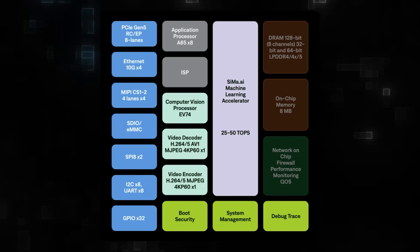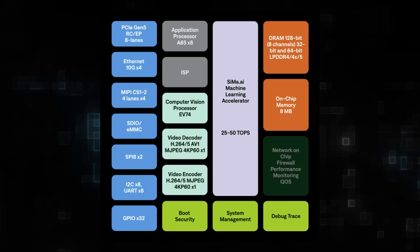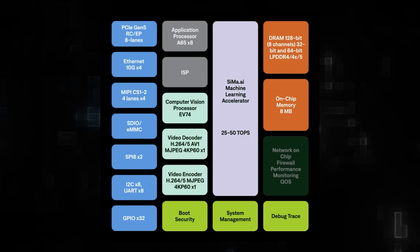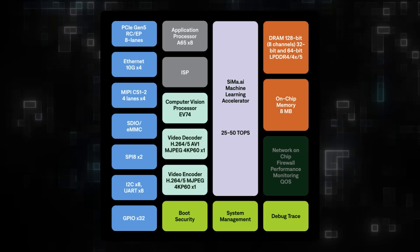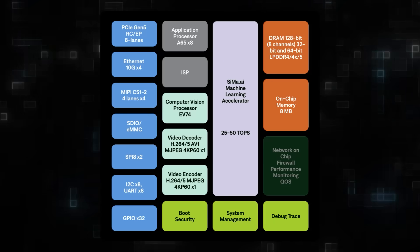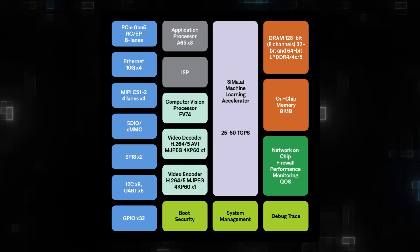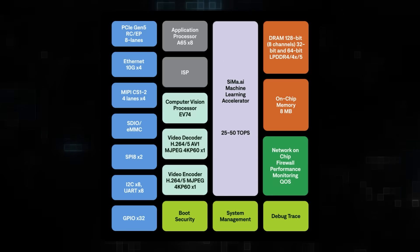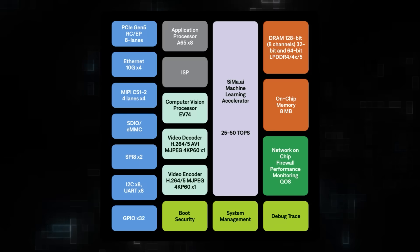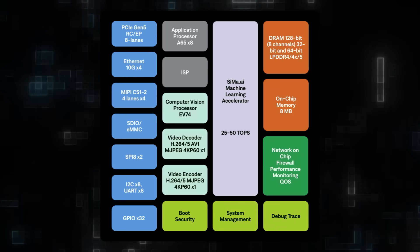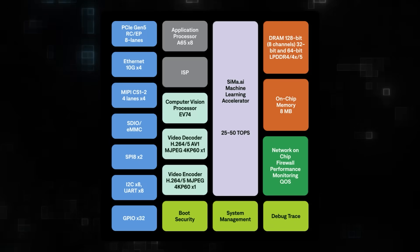For memory and storage, we have support for DDR4, along with 4 megabytes of ultra-fast on-chip memory. And finally, the network-on-chip and debug trace, which ensures seamless data flow across components with features like virtual memory, TrustZone, and QoS.